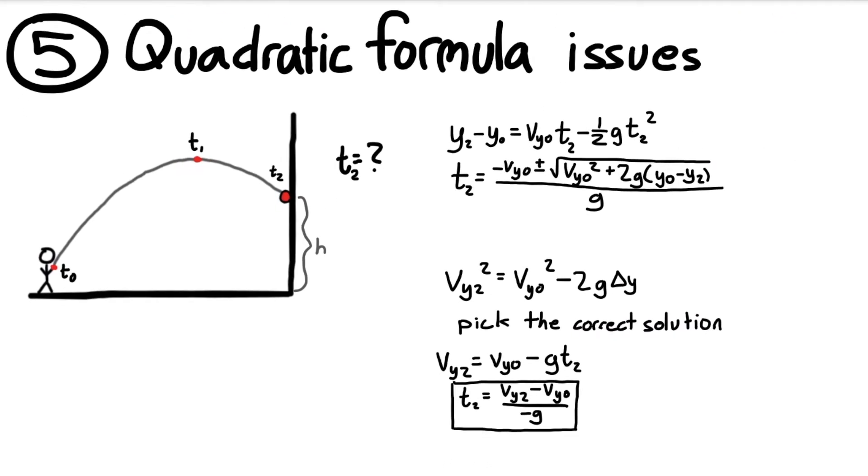Now the fifth common error has to do with the quadratic formula. Whenever you need to solve for time, the most natural way to do it is to use this kinematics equation where your change in y is your initial y position times time minus one-half gravity time squared. And you can solve this using the quadratic formula. But I tend to run into problems when I try to use the quadratic formula just because when I have to type in numbers into my calculator, typing in this is really prone to making errors. So you can lose points for getting the wrong answer even if you did all the actual hard work correct.